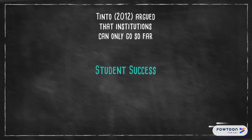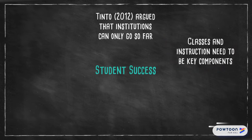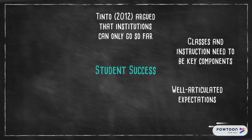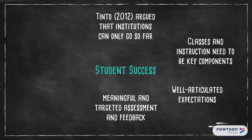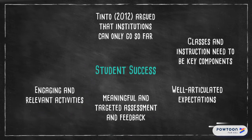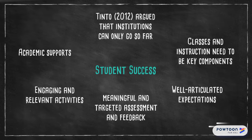Tinto argued that institutions can only go so far in promoting student success — classes and instruction need to be key components as well. Tinto identified that well-articulated expectations, meaningful and targeted assessment and feedback, engaging and relevant activities within the class, and academic supports can all facilitate student success.